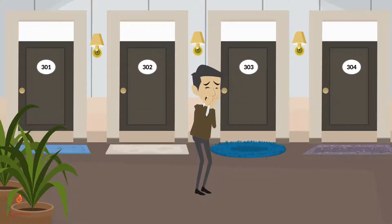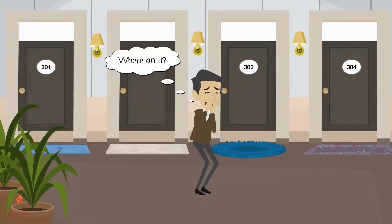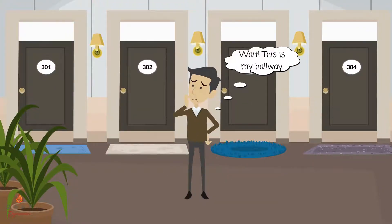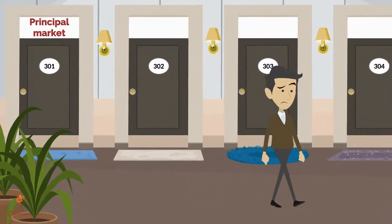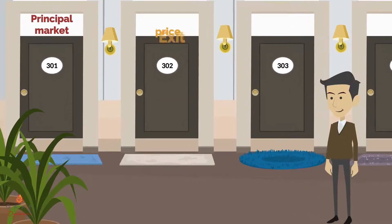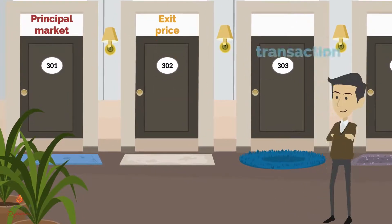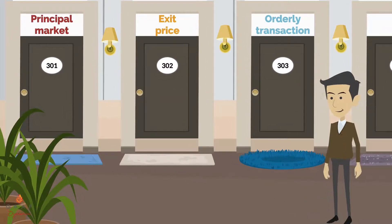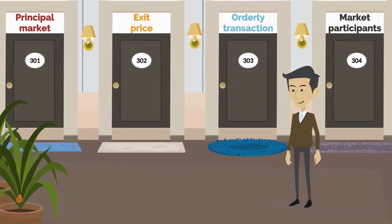Four key concepts related to the fair value definition are the principal market, exit price, an orderly transaction, and market participants.